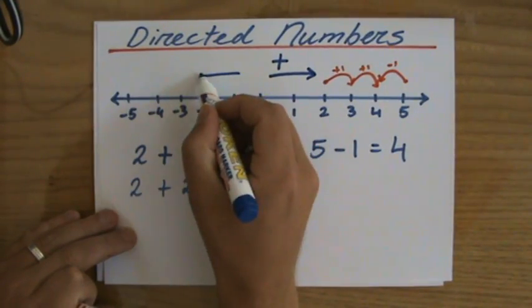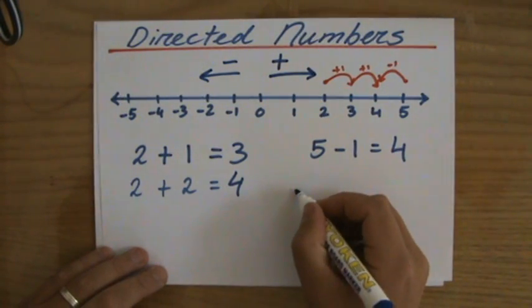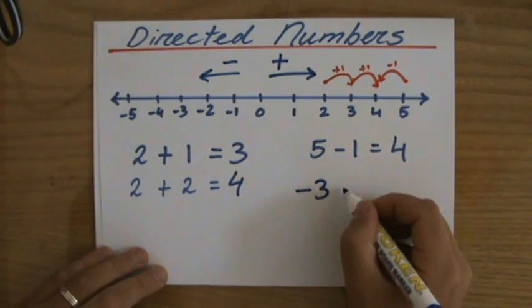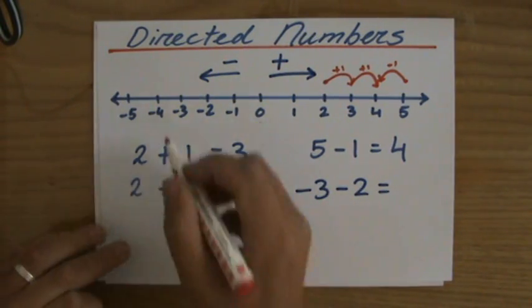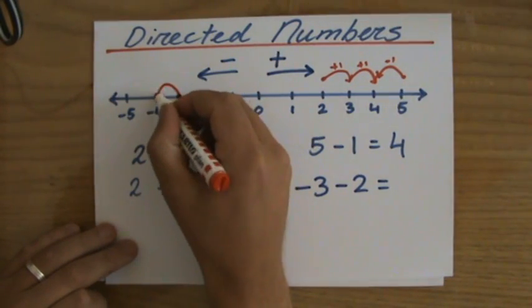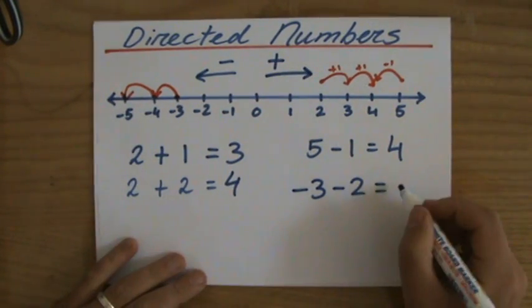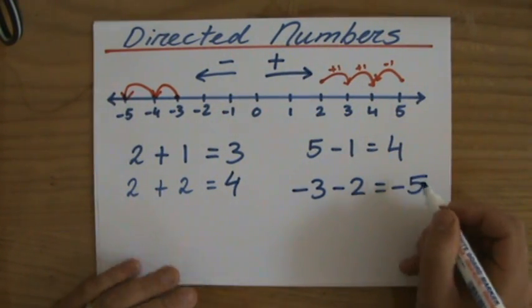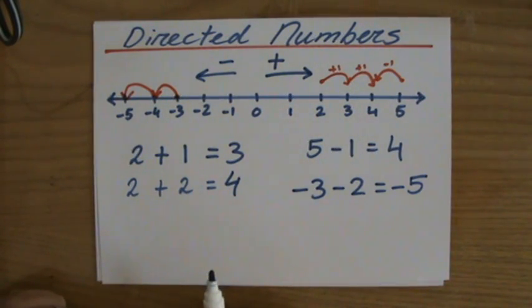Now all of a sudden that makes it a lot more easy to say, for instance, minus 3 minus 2. So minus 3, and I'm subtracting, so I'm going to the left. So the answer, minus 3 minus 2, is going to be minus 5. That is the explanation you need for directed numbers.